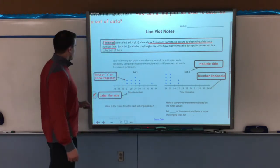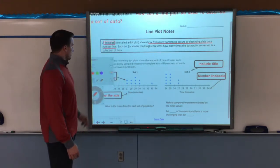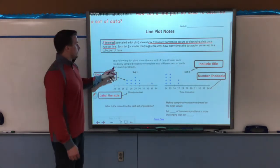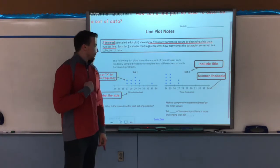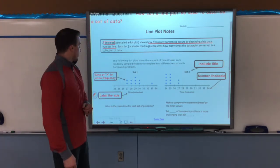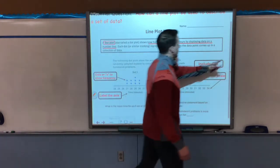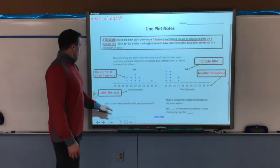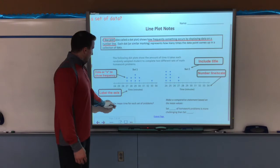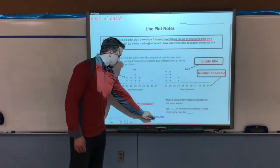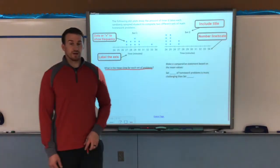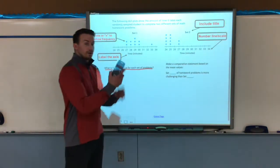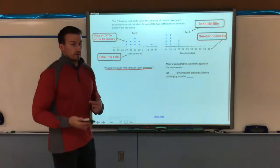The following dot plots show the amount of time it takes each randomly sampled student to complete two different sets of math homework problems. So it could be cohort A, cohort B, you never know. The question is, what is the mean time for each set of problems? So I need to find the mean or the average. So that means I'm adding them up. Remember, use your calculator, helps you out, makes you go faster.